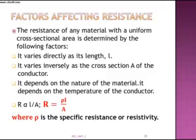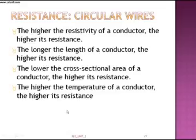Now we will see the different factors which affect resistance. We all know the expression: resistance is given by ρL/A, where ρ is the specific resistance or resistivity. From this it is very clear that resistance is directly proportional to the length of a wire and inversely proportional to the area of cross section.